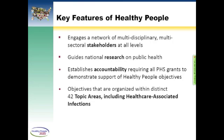Every public health service grant applicant must demonstrate in their application how the project will support the achievement of these national goals and objectives. With Healthy People 2020, there are about 1,200 individual measures that eventually will have targets. Those measures or objectives are organized within 42 topic areas, including healthcare-associated infection.